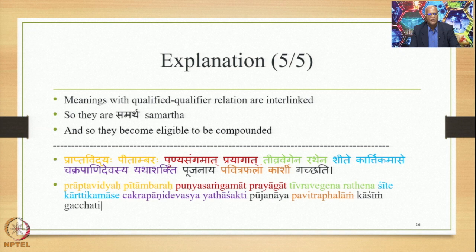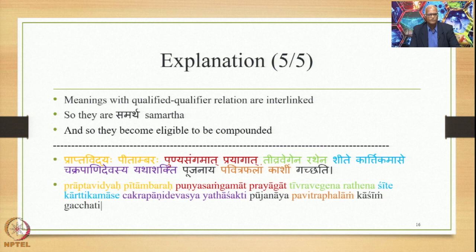It is clear that the Samasas studied in this course — namely Avyabhava, Bahuvrihi, and Dvandva — when their process of derivation happens, these factors come into play. Praptavidya qualifies Pitambara, Punya-Sangama qualifies Prayaga, Tivra-Vega qualifies Ratha, Chakra-Pani qualifies Deva, and Pavitra-Phala qualifies Kashi. We can draw the conclusion that meanings with a qualified-qualifier relation are interlinked, so they are Samartha — capable of expressing the interlinked meaning — and so they become eligible to be compounded.